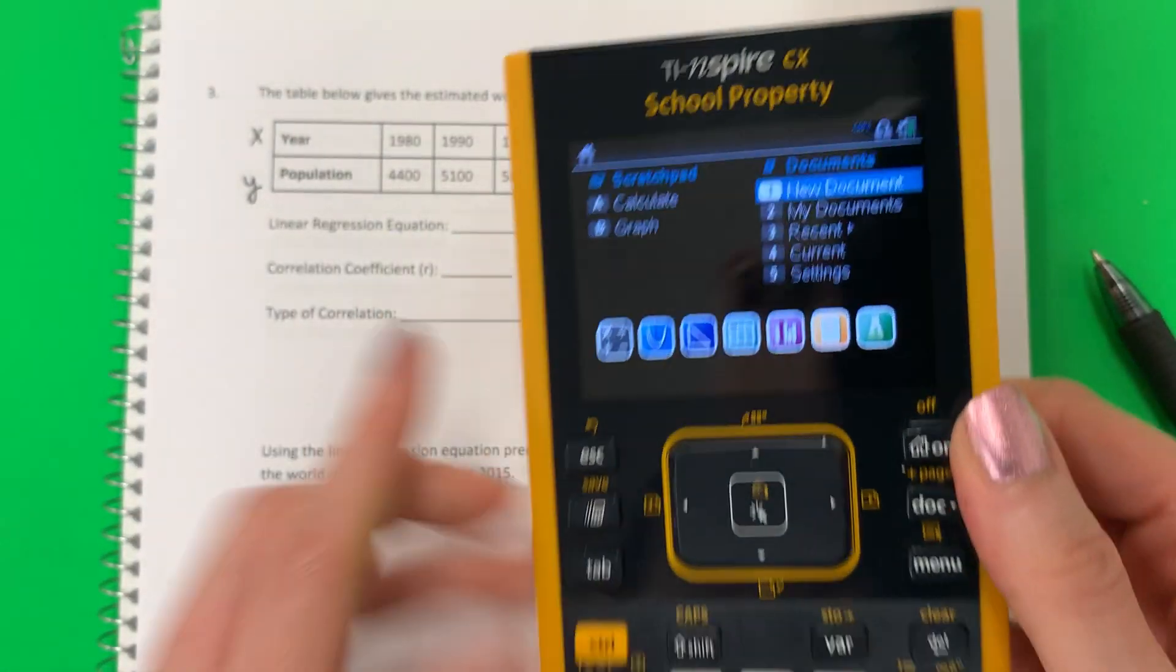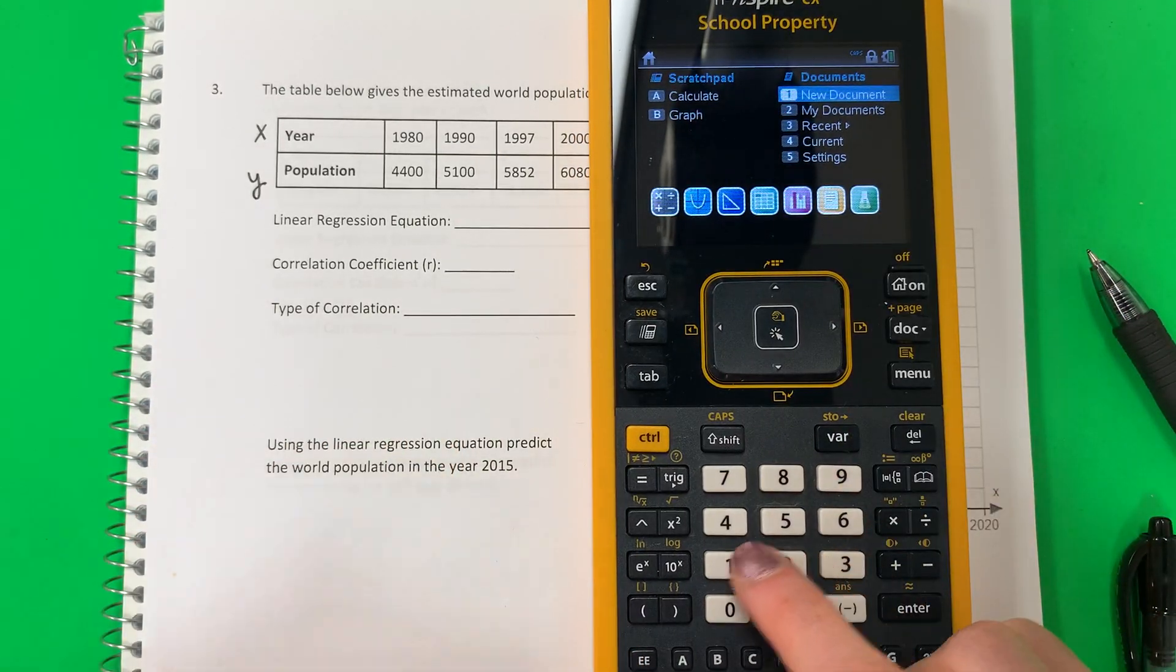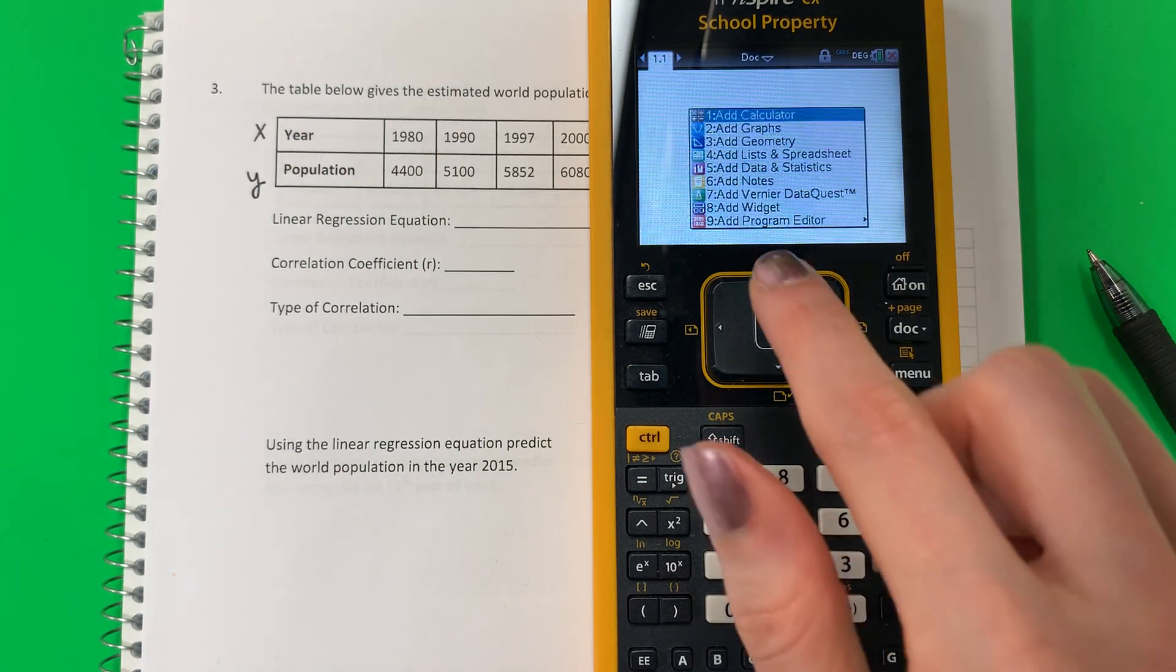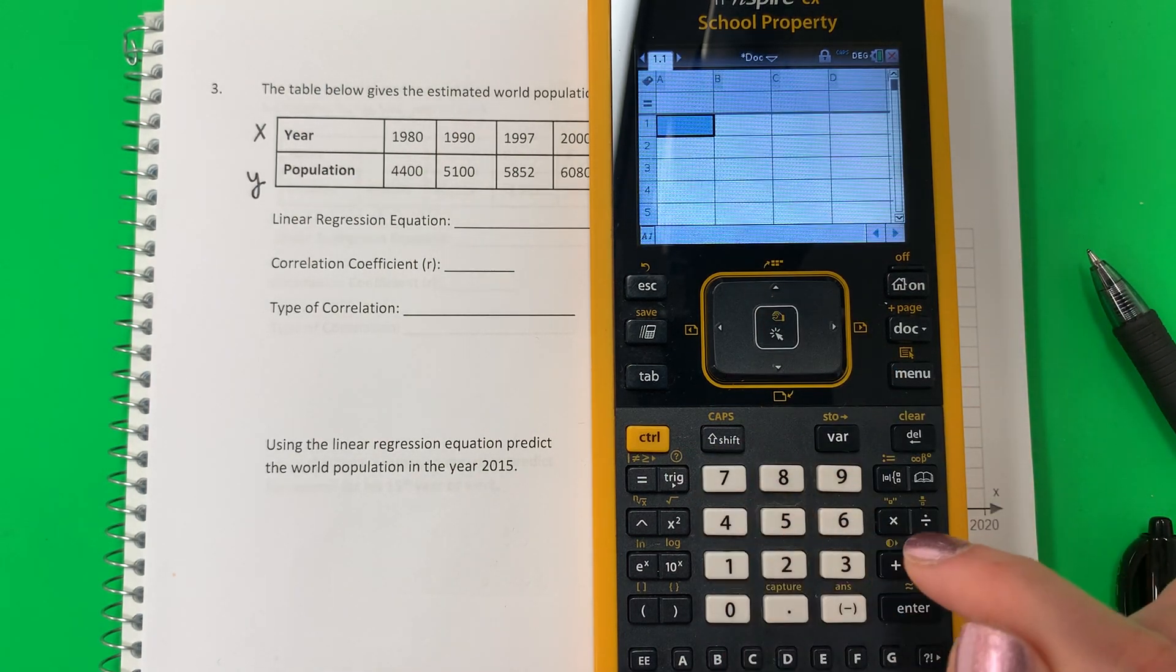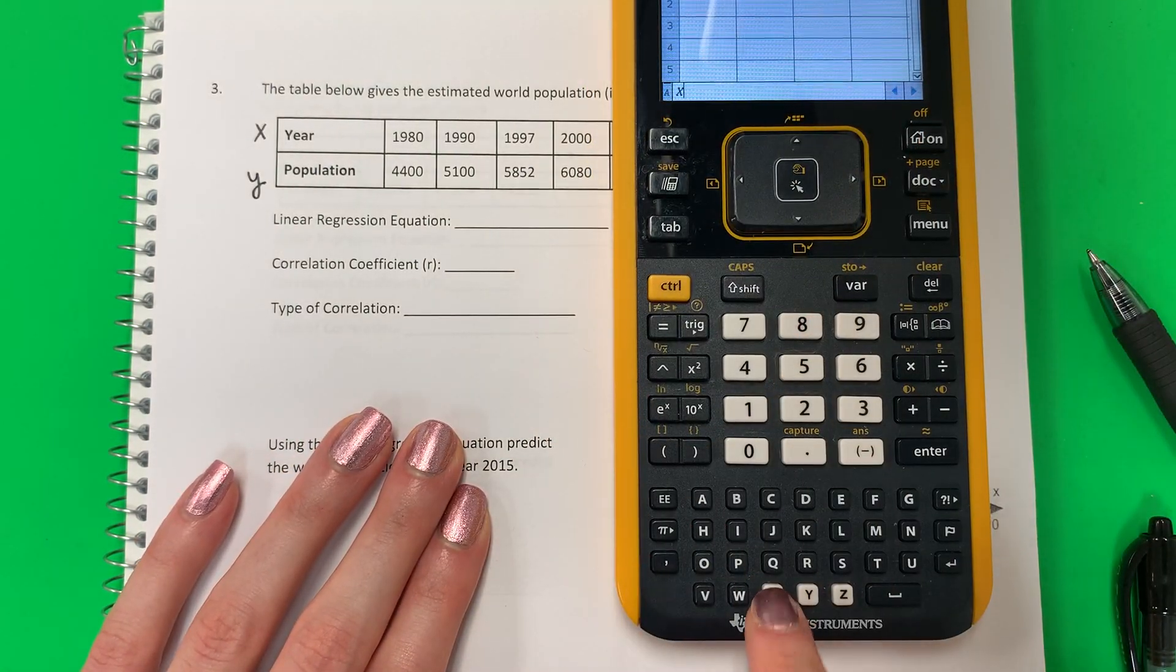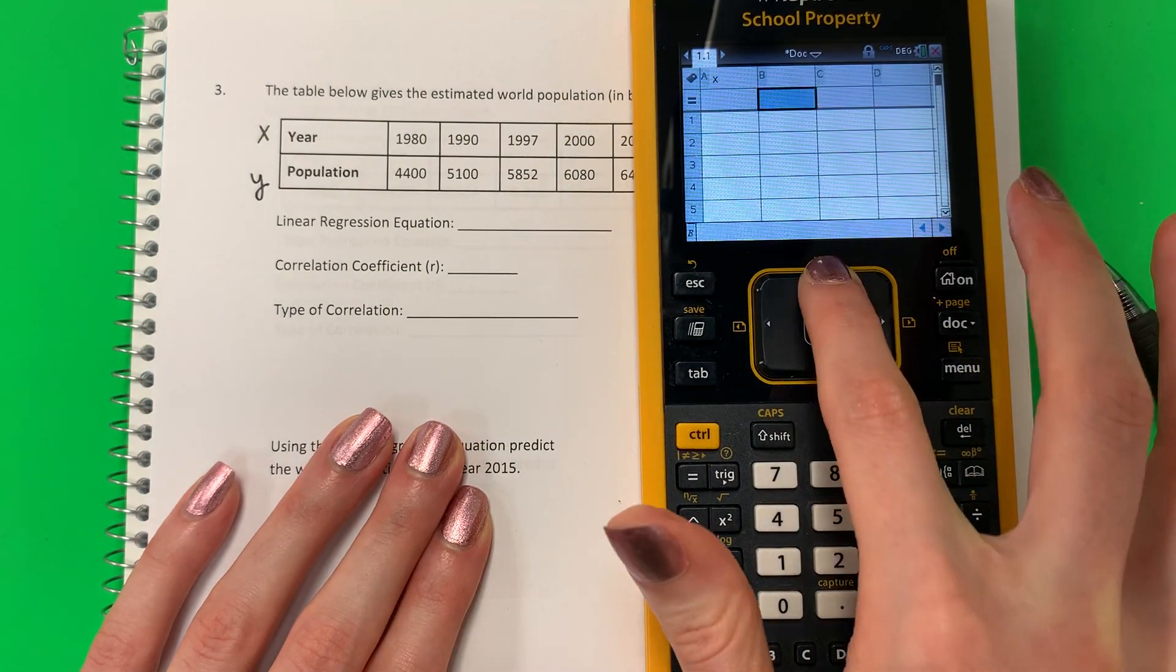So the very first thing that you will do is go ahead and push on. You're going to do 1, no. And then you're going to go ahead and do 4 for the table, 4 por la tabla. Change A for X, A por X, so make sure you put the X there. And then B for Y.